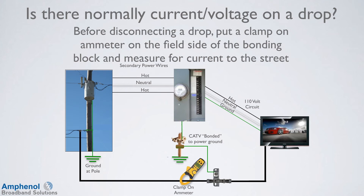If you have a clamp-on ammeter, put it on the drop before disconnecting and measure the current. Measure for a bit to see if the power neutral is intermittent when the wind is blowing. One amp or less is okay; if more, do not disconnect. If you do disconnect the drop and the customer says their lights went out, don't attempt to reconnect the drop — follow your company policy. If you don't have an ammeter, ask the customer if their lights have been flickering or changing intensity, especially after a storm, as it's a good indication of a faulty power neutral and you should stay away until further testing is done.